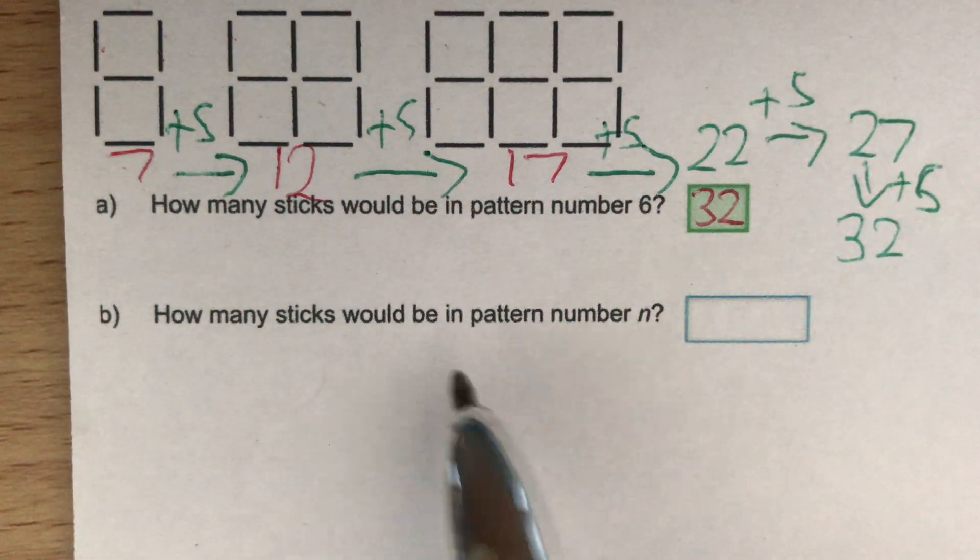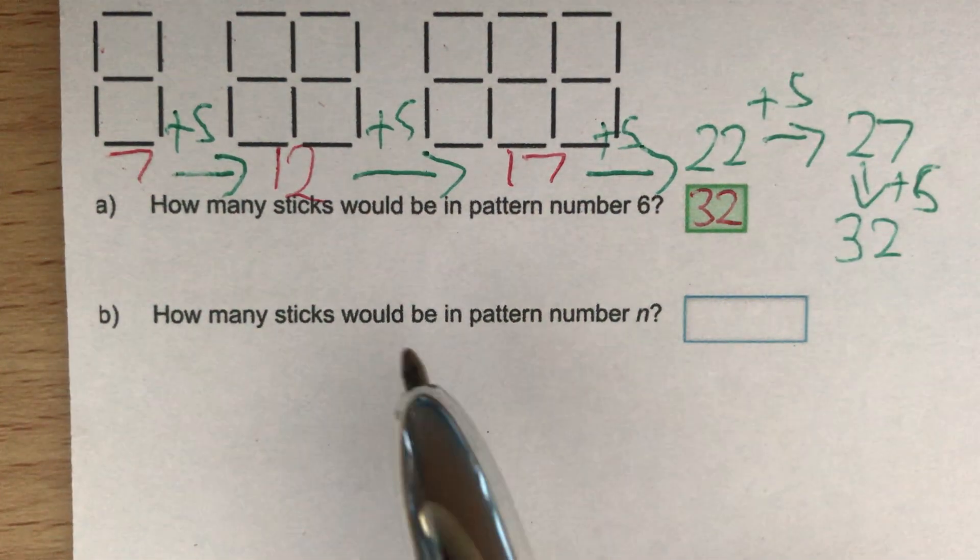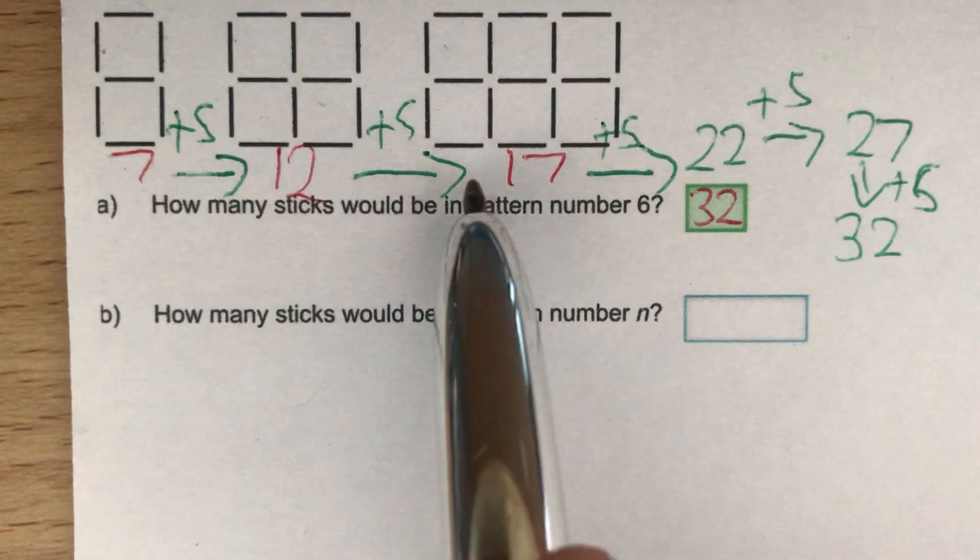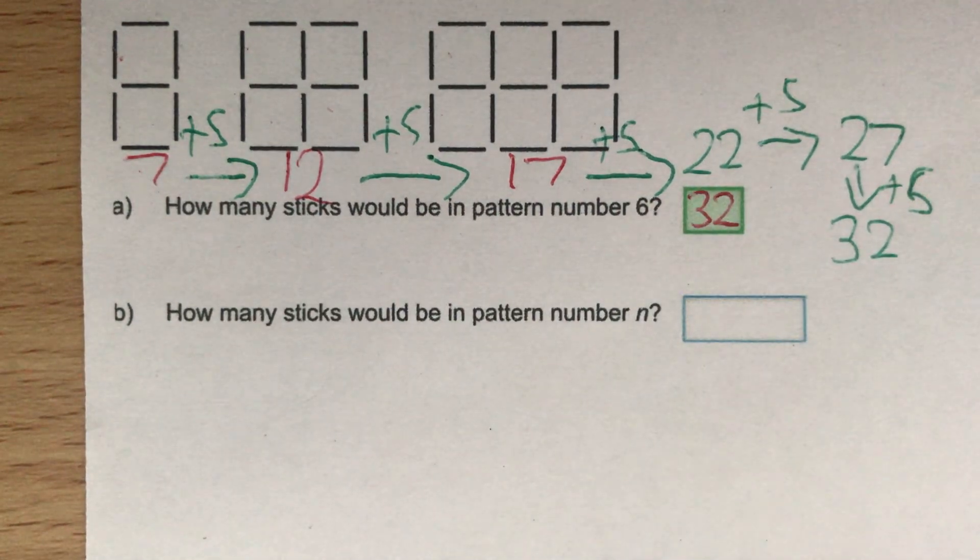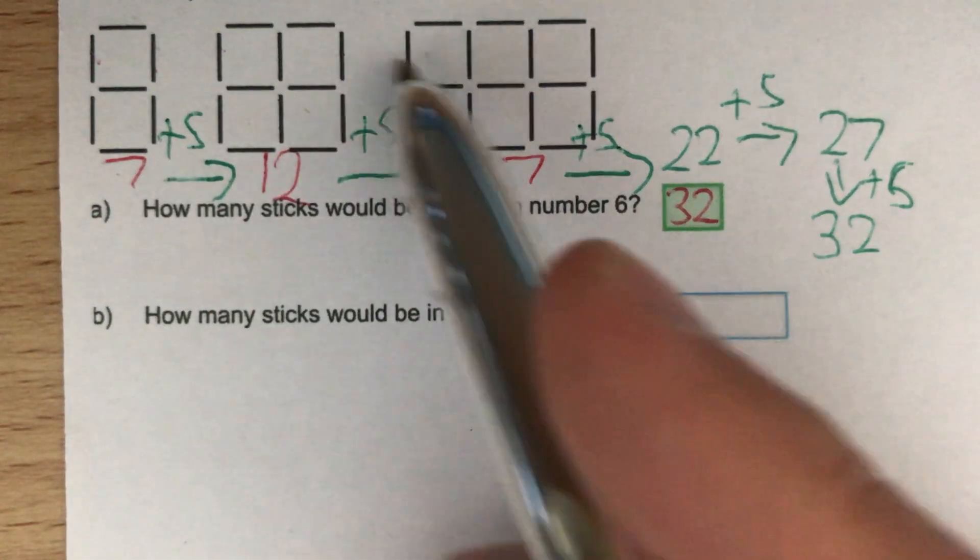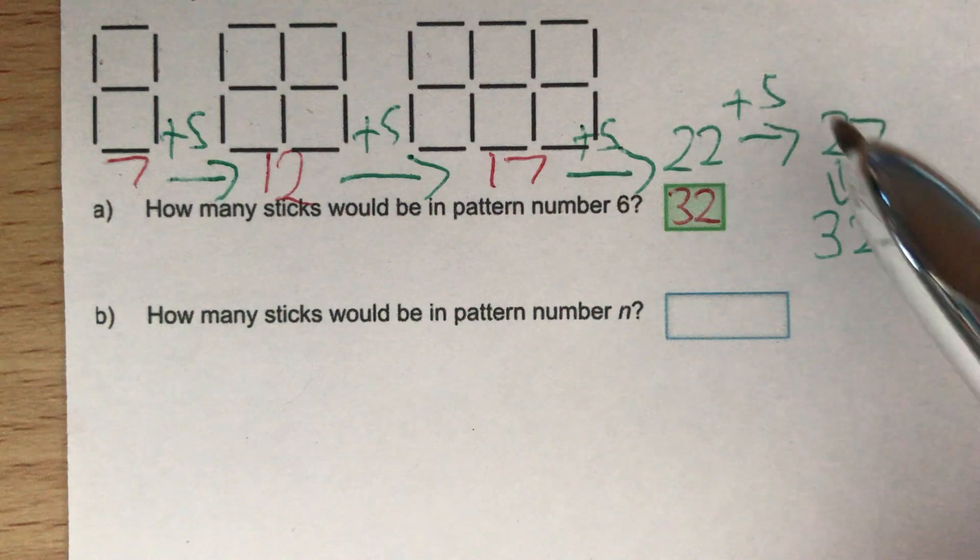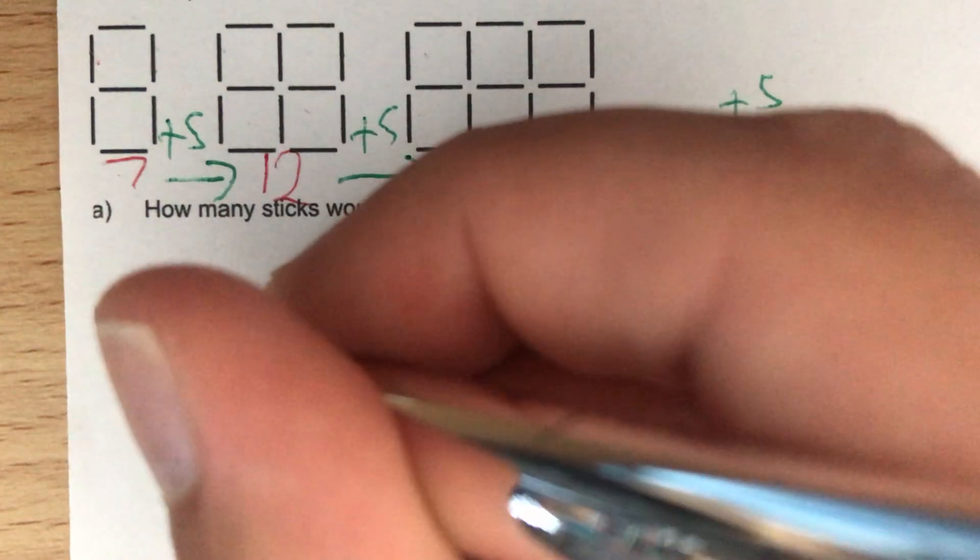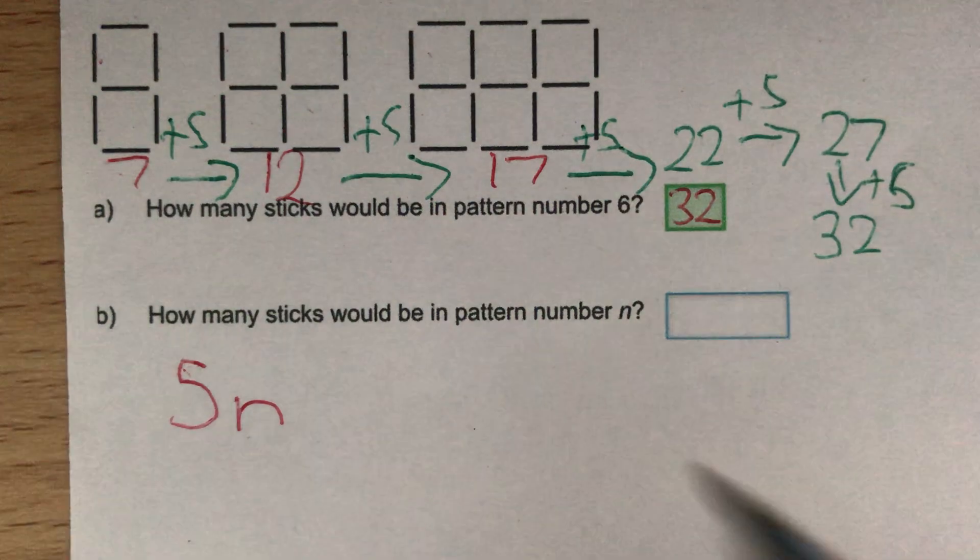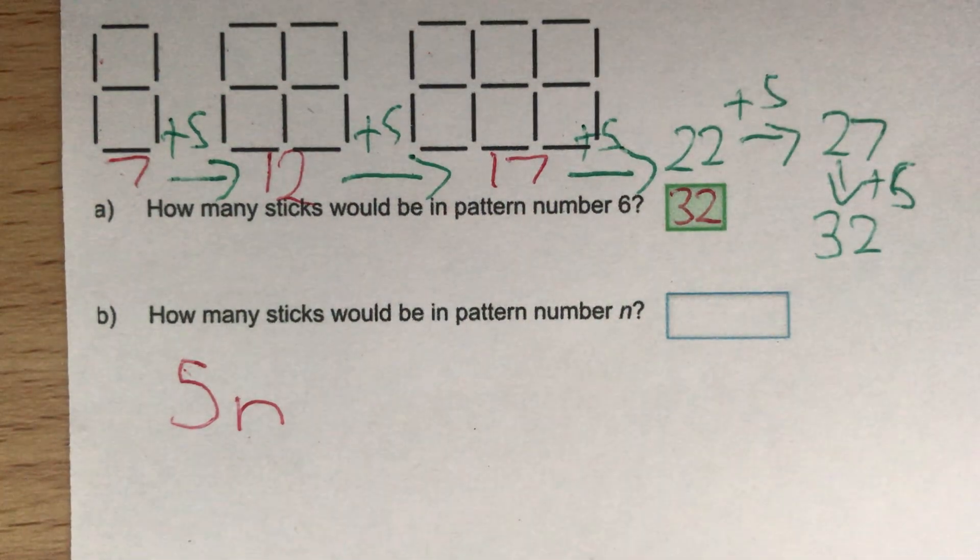Now part B, we're asked how many sticks would be in pattern number n. So what this is really asking us is what's the nth term of this sequence that we've written out. Well, the nth term we can find by looking at how much we're going up by each time. So we're going up by 5 each time, so that means we're starting off with 5n. 5n just means we're increasing by 5 every time we go up 1.